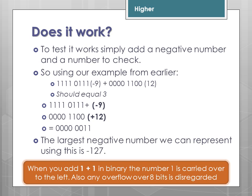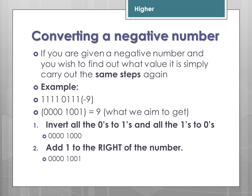The largest negative number we can represent using this notation is minus 127. If you're given a negative number already in 2's complement and you wish to find out what the value actually is, simply carry out the same steps again. So if you start off with minus 9, invert it again — this should give us the inverted form — then add 1 to the right-hand side. That is the positive version: no 2s, no 4s, no 8s, so 1 plus 8 is 9. So this confirms it is minus 9.